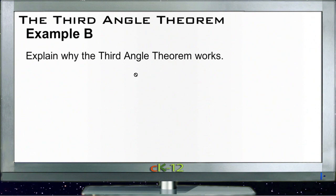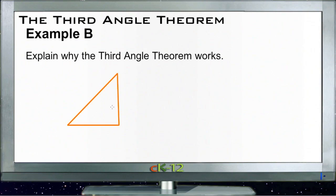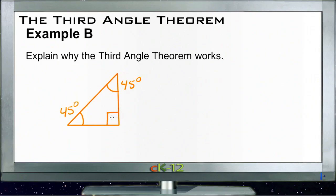Let's take a look at example B, which asks us to explain why the third angle theorem works. This is really just an extension of the triangle sum theorem. If we know a triangle has two angles with given measurements — say each is 45 degrees — then since the three angles always have to equal 180 degrees, the third angle is fixed and specified.